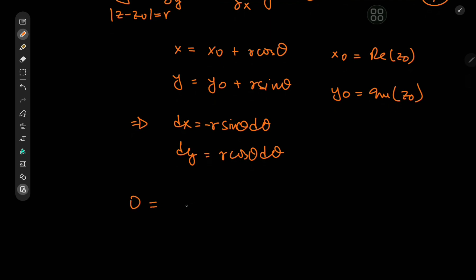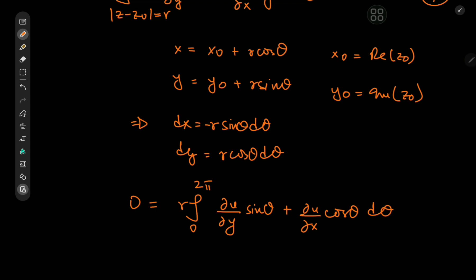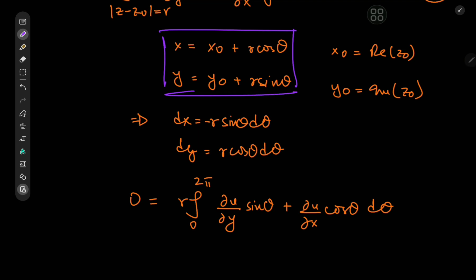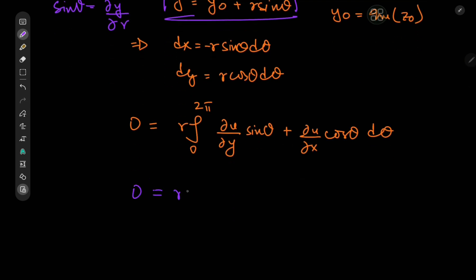We can use these results in equation 1. So we have 0 equal to the integral, which transforms into an integral from 0 to 2pi of partial u by partial y times sine theta — where the negative signs cancel — plus partial u by partial x times cosine theta. The r here is a constant that we can factor out, and we're now integrating with respect to theta. Now, cosine theta equals partial x by partial r, and sine theta equals partial y by partial r.